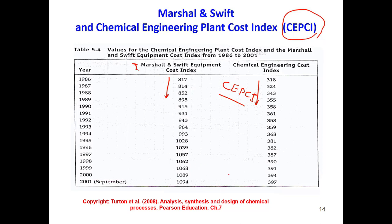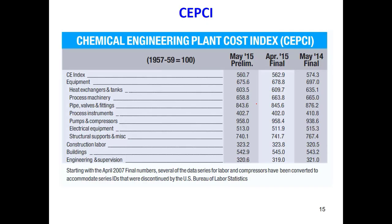There are also tables published specifically for the Chemical Engineering Plant Cost Index (CEPCI) that give the index value for specific equipment — for example, heat exchangers, machinery, pipes, valves and fittings, pumps, and compressors. These indexes are sometimes reported month by month, with some companies publishing updated values every month.